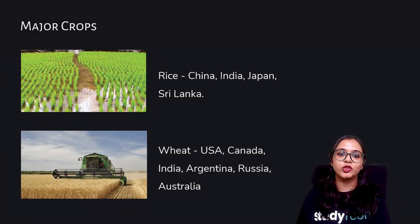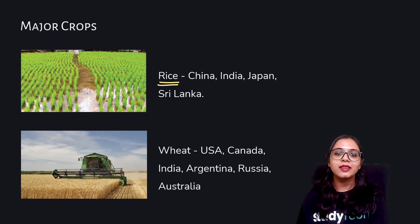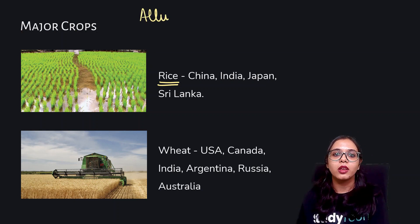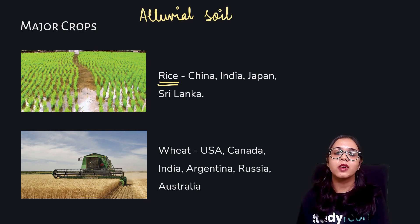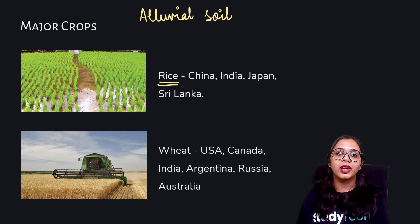The first major crop we're talking about is rice. Rice needs alluvial soil for its growth and cultivation, because alluvial soil is able to retain a large amount of moisture.